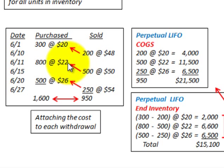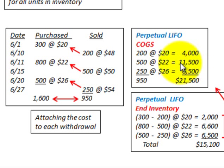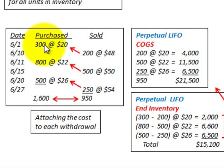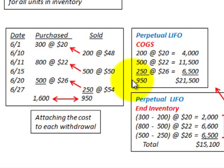For the next sale of 500 units, they go against the most recent purchases of 800 units at $22 each — 500 units at $22 gives us $11,500 in cost of goods sold. For the final sale of 200 units, they go against the most recent remaining purchases of 300 units at $20 each — 200 units at $20 gives us $4,000 in cost of goods sold.